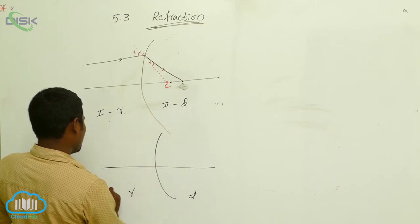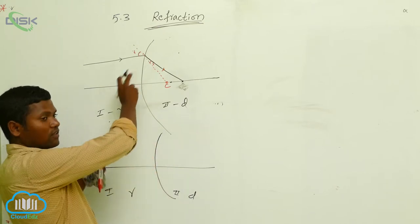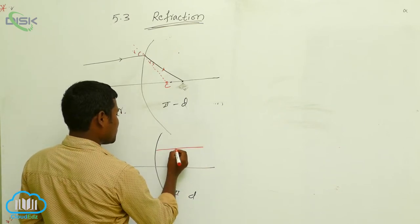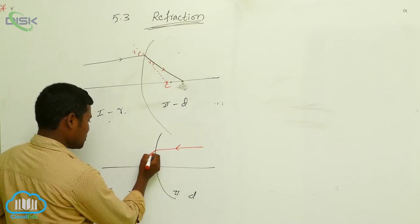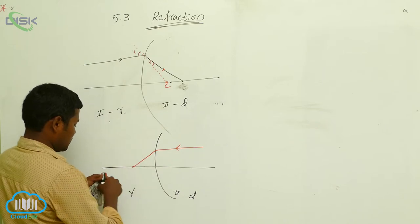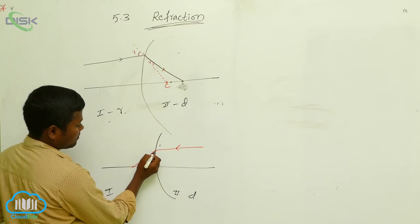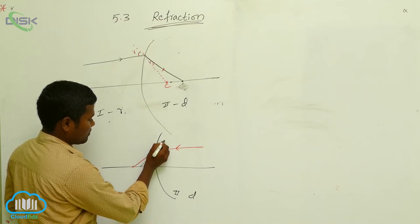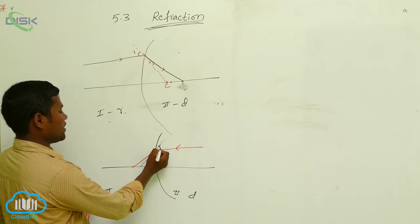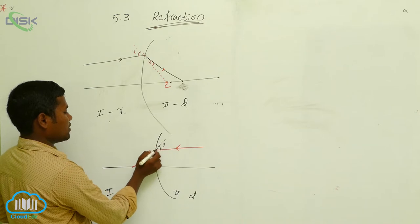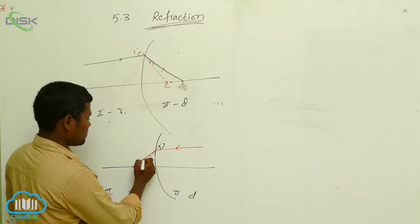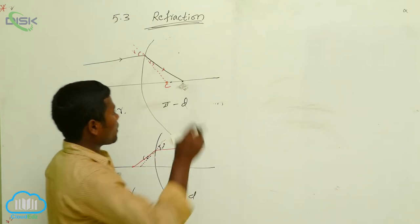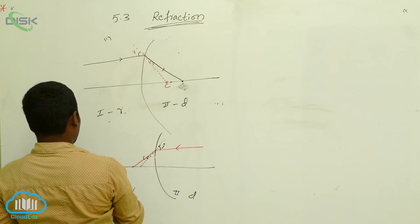Rarer medium, denser medium. This is the first medium, this is the second medium. In the first case, rays started from the rarer medium. Now in this case, the rays started from the denser medium. Where is the normal line now? This is the normal line. Again, this is the incident angle. This angle — what are you calling this angle? Refraction. Always you have to show the angle with respect to the normal line. Another case we can take. This is the first one, this is the second one, and now we can draw the third one.